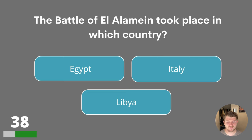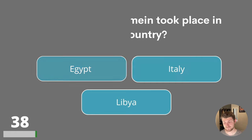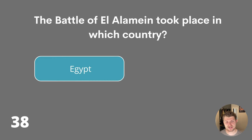Question thirty-eight. The Battle of El Alamein took place in which country? Egypt, Italy or Libya? The answer is Egypt.